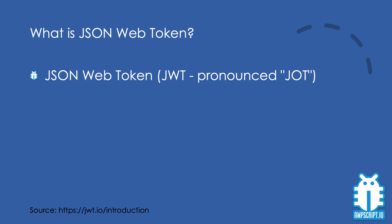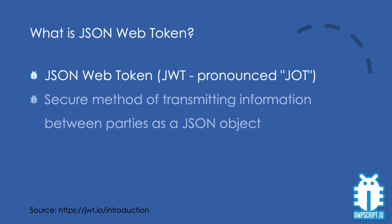JSON Web Token, or in short JOT, is an open industry standard that defines a compact and self-contained way for securely transmitting information between parties as a JSON object. The information can be verified and trusted because it's digitally signed.